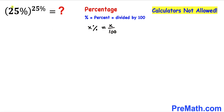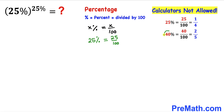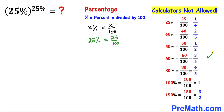Since we are dealing with 25%, we can write 25% as 25 divided by 100, which simplifies to 1 divided by 4. Likewise, if we have 40%, this could be written as 40 divided by 100, which reduces to 2 divided by 5 as a fraction. So therefore 25% is the same as 1 divided by 4.